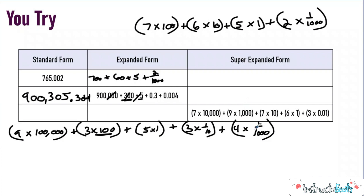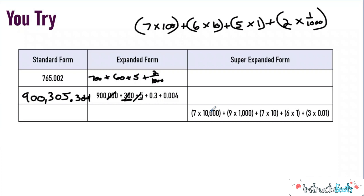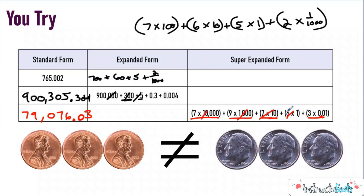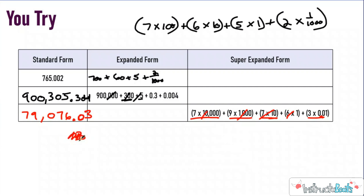Let's check the next one. Here I see I had seven in the ten-thousands place, then a nine in the thousands. My next digit is in the tens place, so I have a zero in the hundreds and seven groups of ten. Then I had six groups of one. My next digit is in the hundredths place, so I put my decimal and a zero here because I had zero tenths, then three hundredths. If you just put decimal three, you'd make that three-tenths, which is different from three-hundredths — three dimes is not the same as three pennies. Make sure you put that zero to hold that place value and get your three in the right spot.